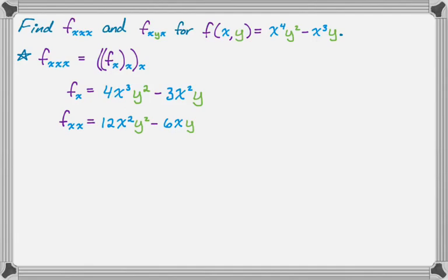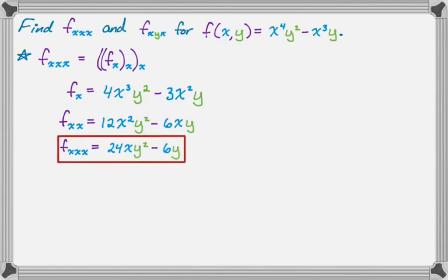Now we just take the derivative of this with respect to x — this will be our final answer. Derivative of 12x squared is 24x, times y squared because it's constant, minus the derivative of 6x which is 6, times y. And there you go.